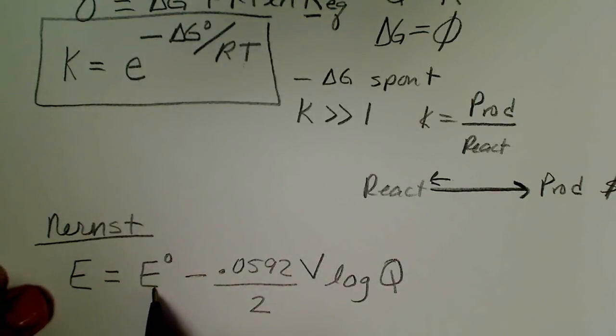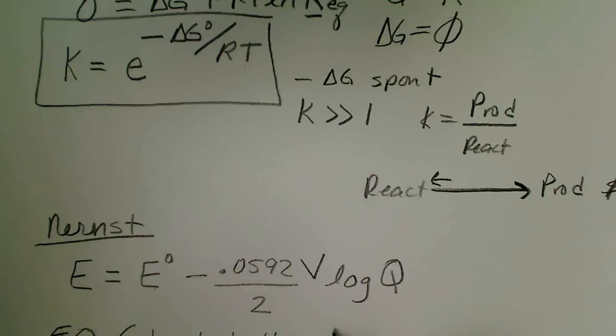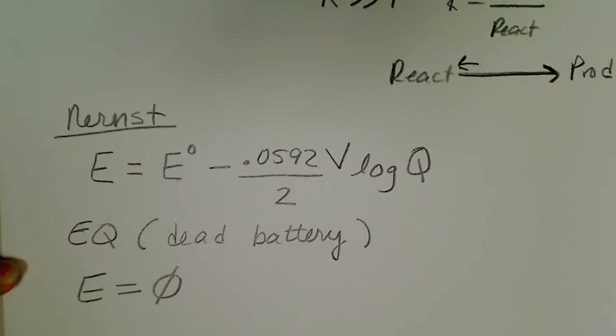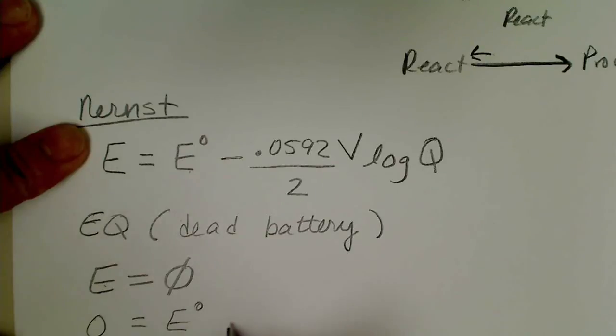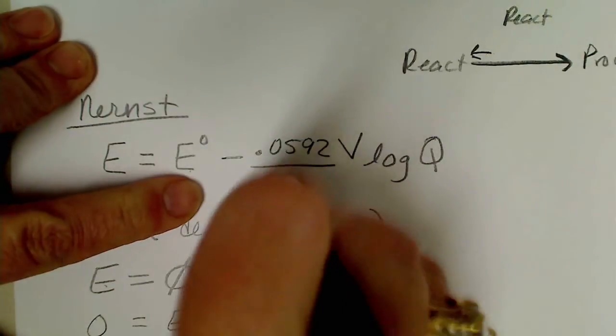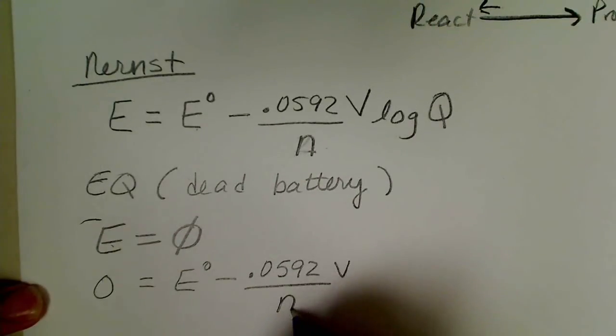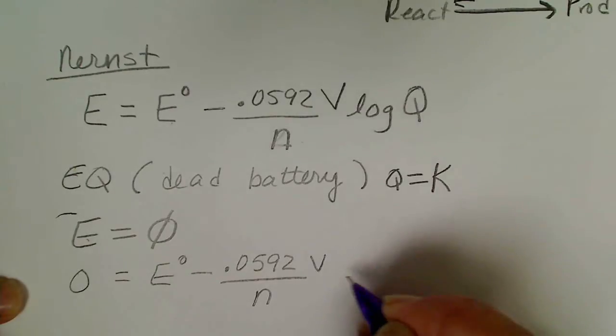In a video that I'll make next will actually plug values in and calculate for this, but again equilibrium in electrochemistry means we have a dead battery. That electrons are no longer being transferred, and that would mean the E for that cell would be zero. So if we plug that in for here, zero would equal E° minus 0.0592 volts divided by n, and then at equilibrium Q has the same value for K so we make that substitution.